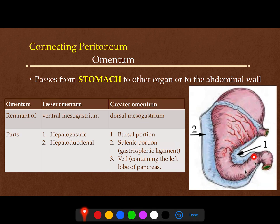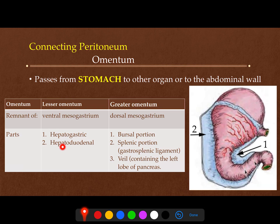Here is the stomach, the lesser curvature of the stomach, and the initial part of the duodenum — and all of this is the greater curvature. The part of the peritoneum attached to the lesser curvature and the beginning of the duodenum is the lesser omentum. The lesser omentum has two parts: the hepatogastric ligament between the liver and the stomach, and the hepatoduodenal ligament between the liver and the initial part of the duodenum.